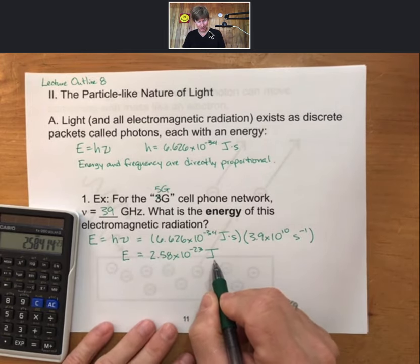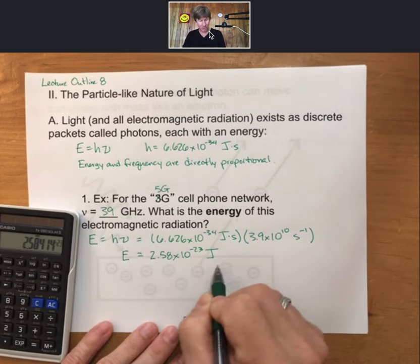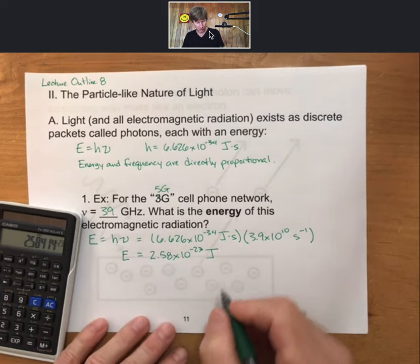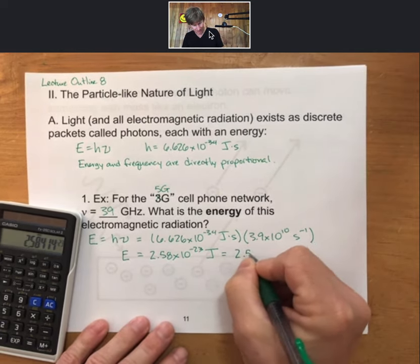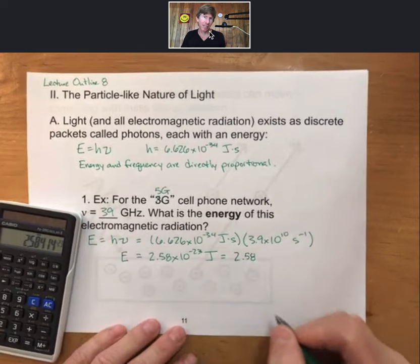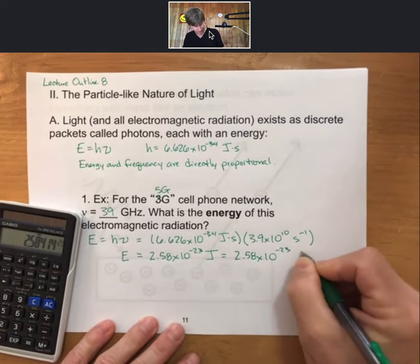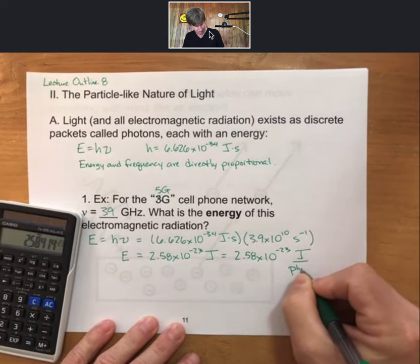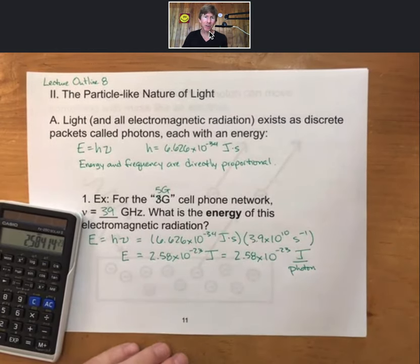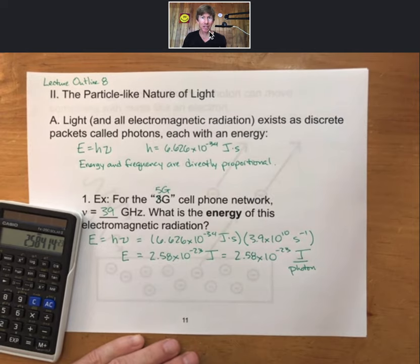Let's talk for a minute about units here. So the equation gives you units of joules. We can also, since this calculation is done for a single photon, add units of photons, or per photon in this case, because this is the energy of a single photon, it is the joules per photon.